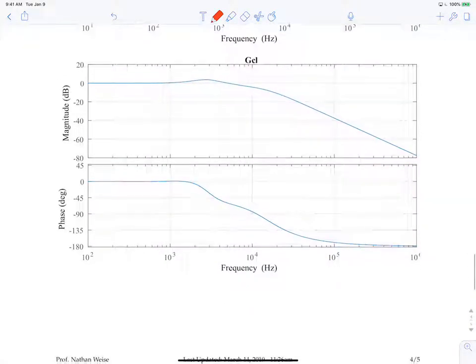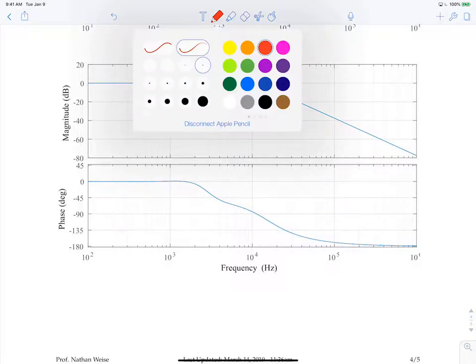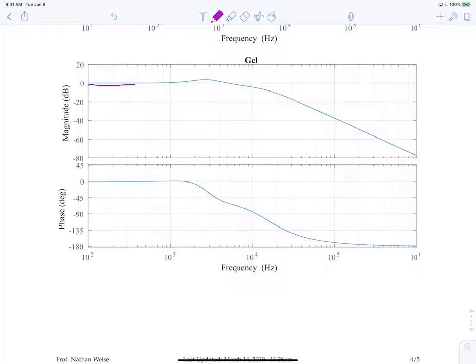So now we go ahead and calculate GCL, which is GOL over 1 plus GOL. Essentially what we would like to see is a low pass filter. This is interesting because you can see here we go flat here and then actually we have a little bit of gain here at this frequency right here. And let's call it anywhere from 1 to 2 kilohertz. So you have this gain and then it rolls off kind of like a low pass filter. And we'll talk about what this means here shortly.